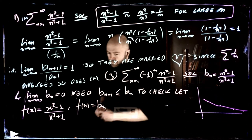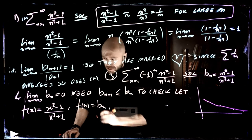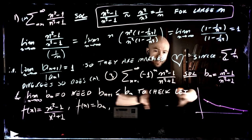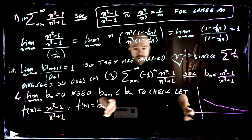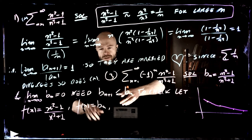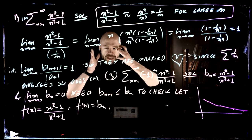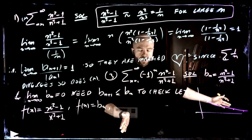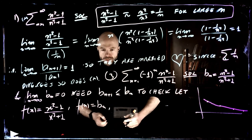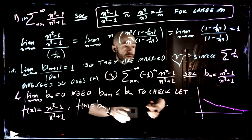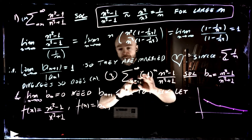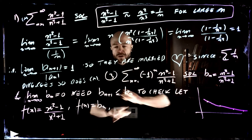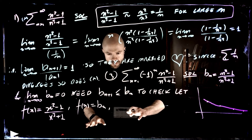The derivative doesn't have to be negative for all x bigger than 0 or 1 — just from some number onwards. Because the convergence of the series just depends on starting anywhere: if you start anywhere and the series converges, then the series converges no matter where you start.